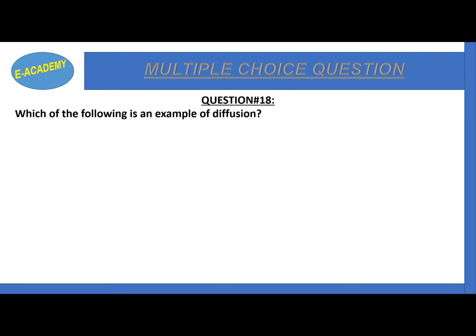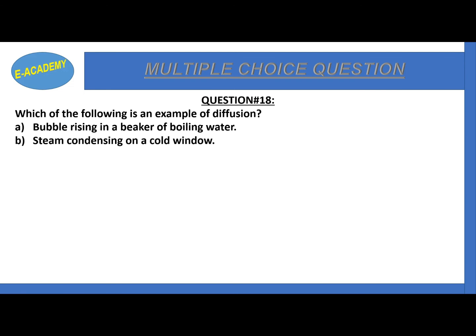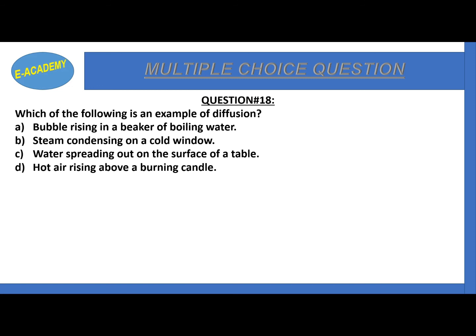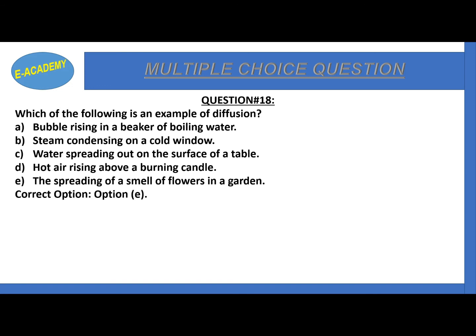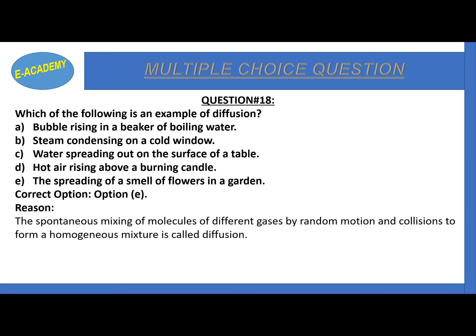Question number 18: which of the following is an example of diffusion - bubble rising in a beaker of boiling water, steam condensing on a cold window, water spreading on the surface of a table, or hot air rising above a burning candle? Option E is the spreading of a smell of flowers in a garden - this is the correct option, as it is an example of diffusion. Diffusion is the spontaneous mixing of molecules of different gases by random motion and collision to form a homogeneous mixture.